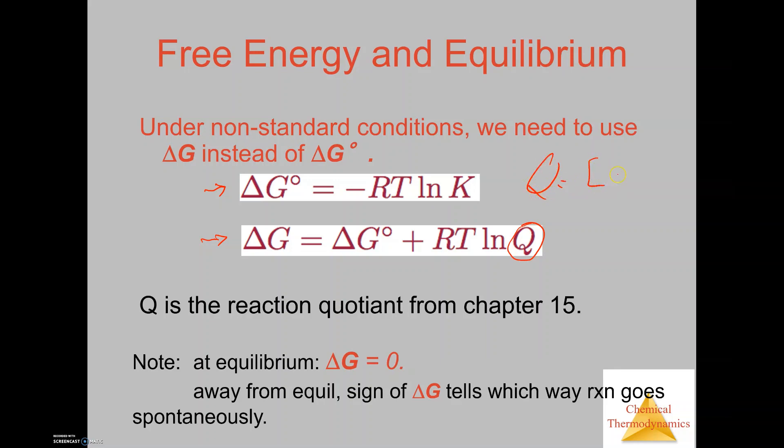The exponents X and Y are based off the coefficients from the balanced equation. If we know your concentrations for the reactants and products, you can plug those into this equation and solve for Q. Temperature will be given to you. R again is 8.314. And then Delta G naught is determined from what we previously looked at with Delta H and Delta S and Gibbs free energy.